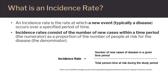The resulting answer is then multiplied by a community population amount, usually 10,000, 50,000, or 100,000. The resulting answer can be expressed as either a percentage or a specific amount of individuals per amount of susceptible population.